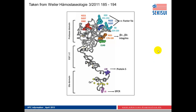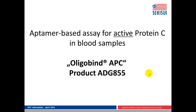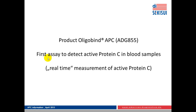Within the APC molecule, the residues that mediate these interactions are mapped and known. So far, there is no assay available that allows the functional quantification of active protein C in blood samples. American Diagnostica GmbH has developed an assay which we call Oligobind APC, product number 855. It's an aptamer-based assay for active protein C in blood samples, and it's the first assay to detect active protein C in blood samples.